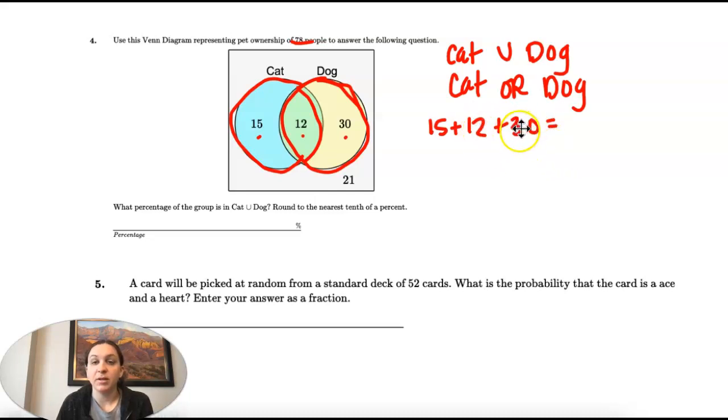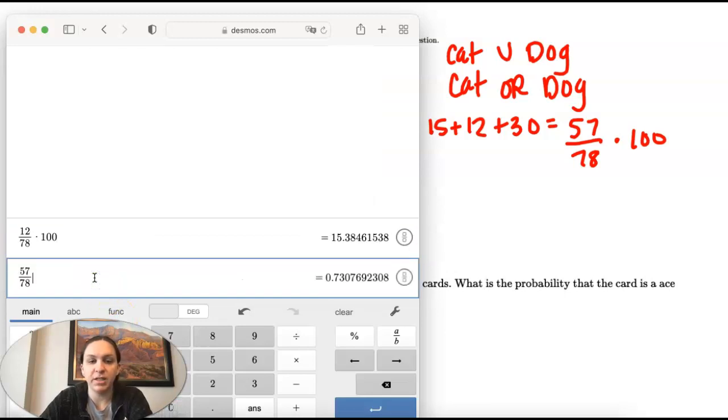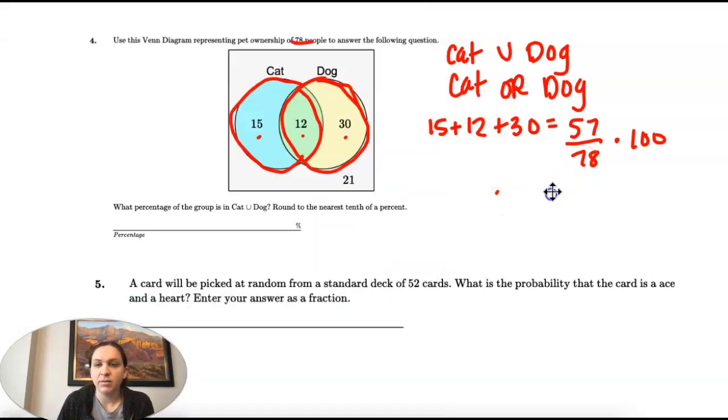And that's going to be 57 over the 78, and then we're going to multiply by the 100 to make it a percent. So 57 over 78 times 100, 73.1 percent. I rounded to the nearest tenth.